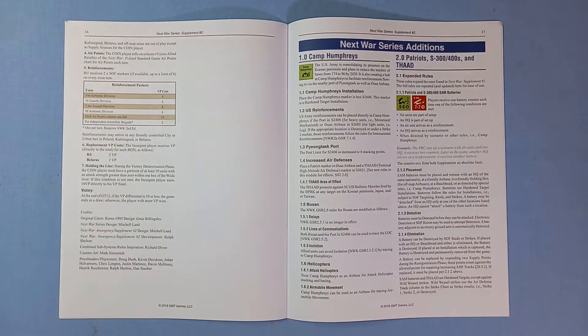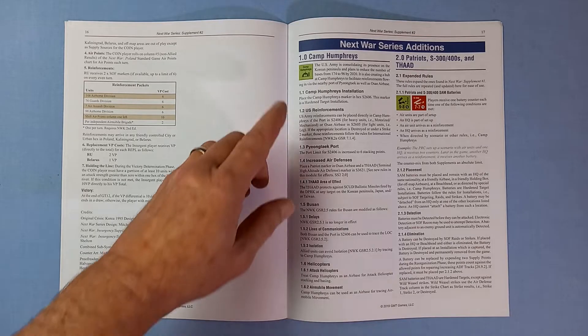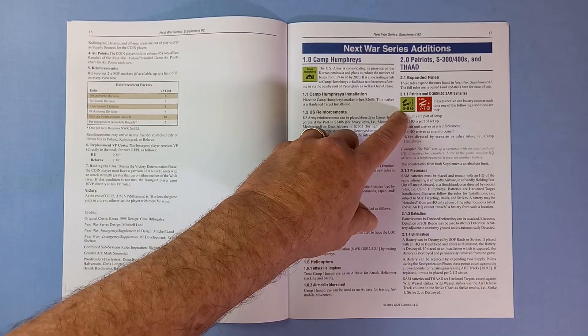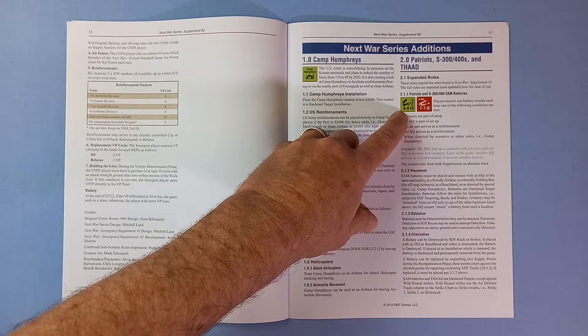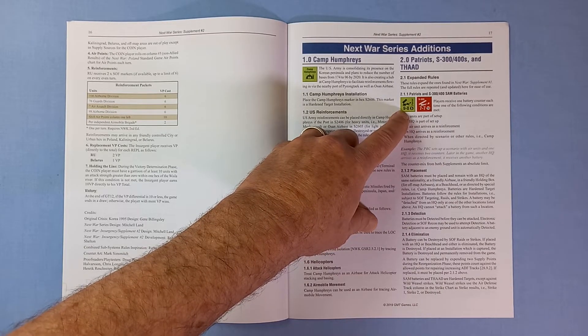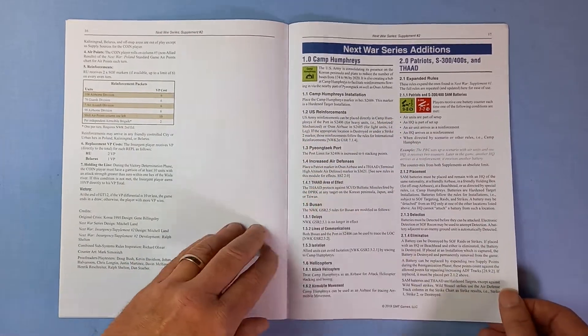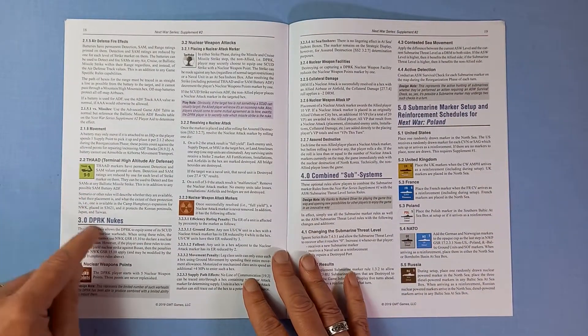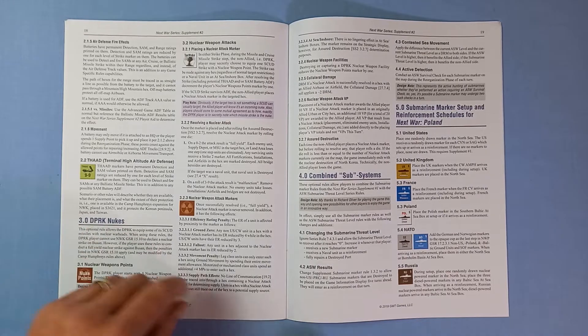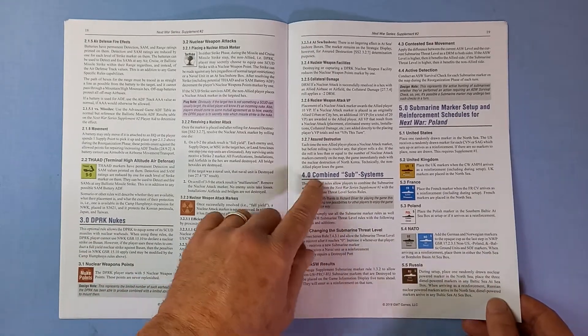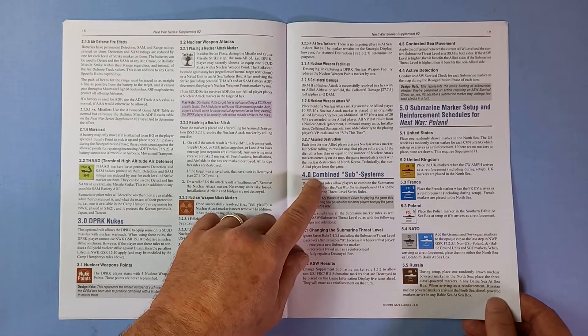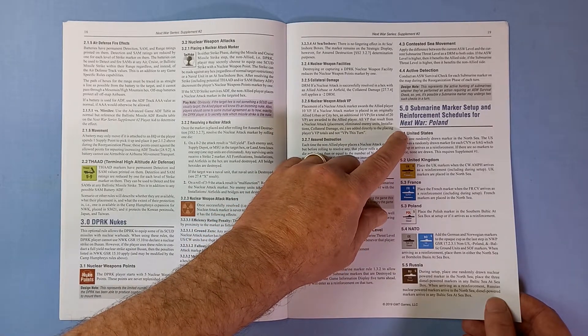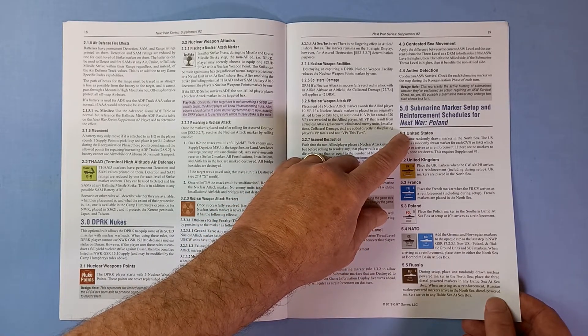And then Next War series additions. Camp Humphreys. Patriots. S 300s and 400s. And FADs. DPRK nukes. Combined subsystems. Submarine marker set up and reinforcement schedules for Next War Poland.